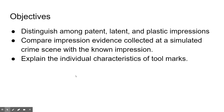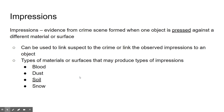We're going to review patent, latent, and plastic impressions, and we're going to look at how we would compare impression evidence from a crime scene to a known impression, and look at the individual characteristics of tool marks. An impression is any indention or marking that is formed when an object is pressed against another material or surface, and you can use it to link a suspect to a crime or link it to the object or tool that made the impression.